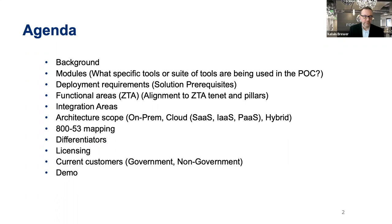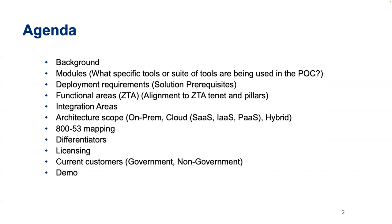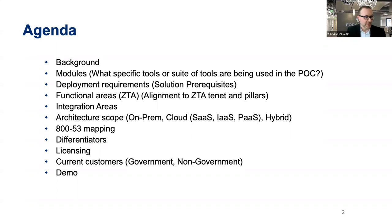For the agenda, we'll go through the company backgrounds on ForgeRock and Peraton briefly, then talk to the different modules we're going to be showing today that apply to the use cases the Zero Trust group asked us to address. We'll talk about deployment requirements for ForgeRock, functional areas we address in the Zero Trust architecture, and some integration areas. Then we'll go into architecture scoping, the 853 mappings, differentiators in the technology, how licensing works, and briefly go through some current customers. The demo will be scattered throughout, so we'll be going back and forth between PowerPoint and demo.